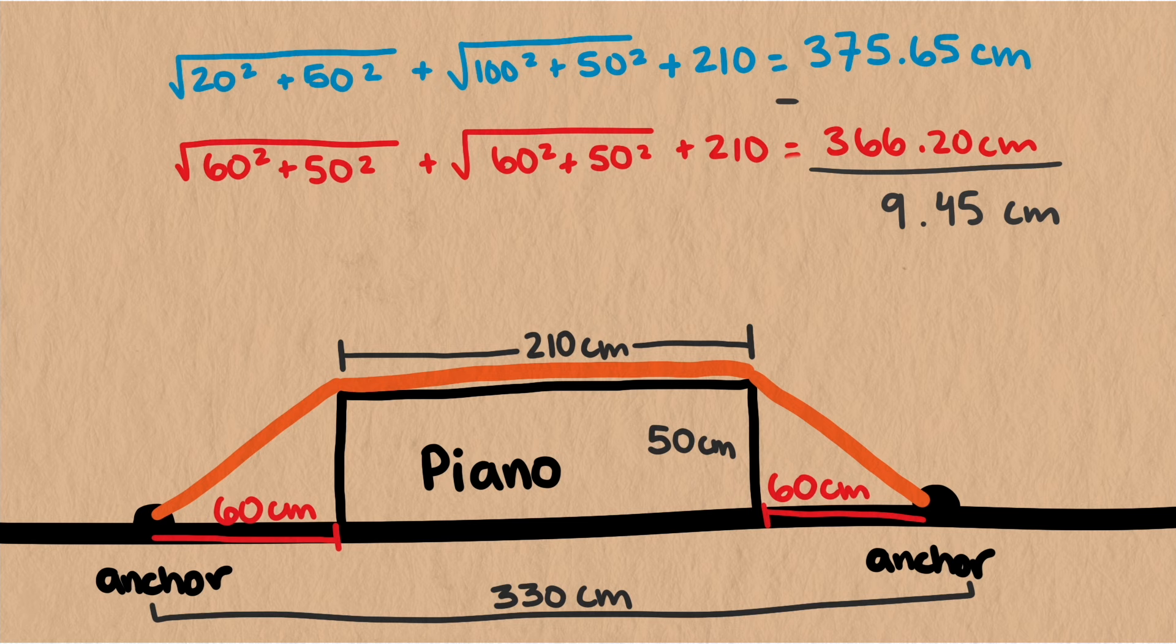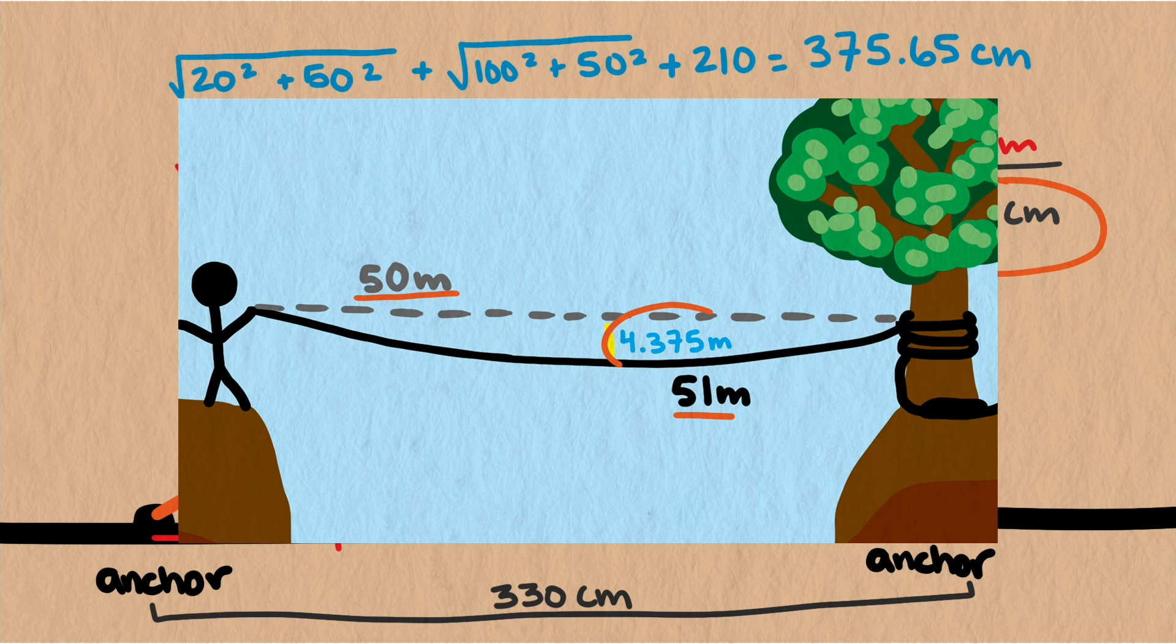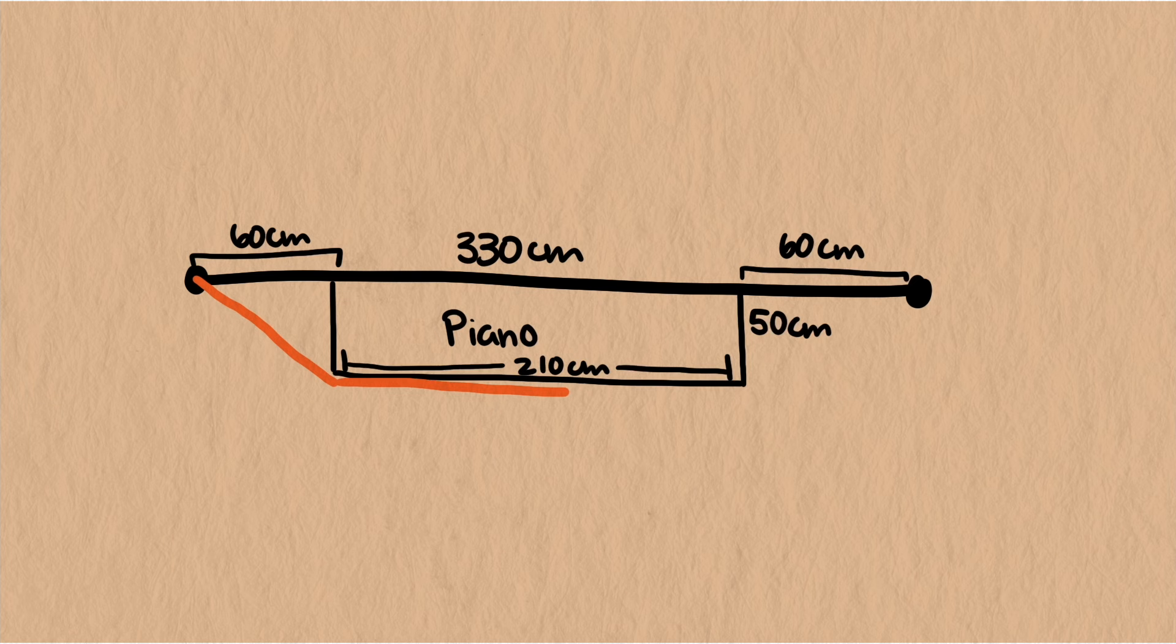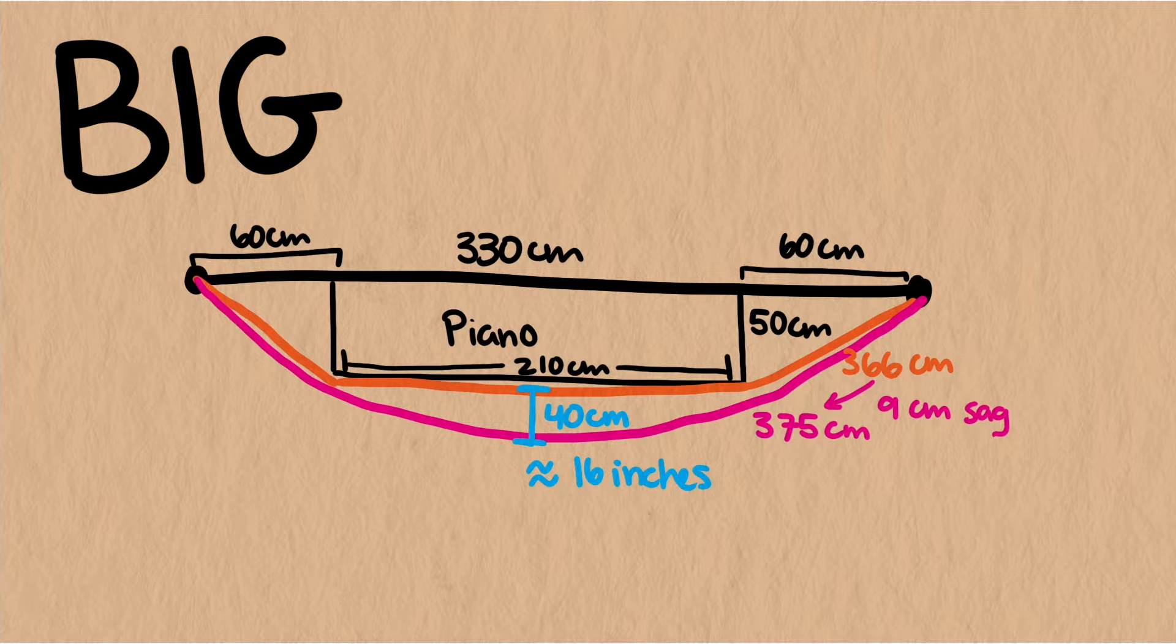We learned from our previous arc length videos that a little slack creates a large sag in the middle of a rope. How much will that nine centimeters of slack cause the strap to sag? About 40 centimeters in the middle. That's also four inches of slack causing a sag in the middle of almost 16 inches. That could be a big problem. Worst case scenario, the anchor gets loose, everything goes flying, like this guy.